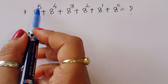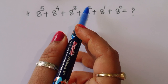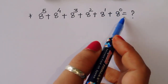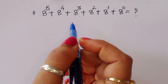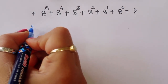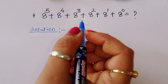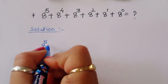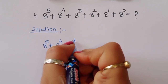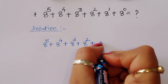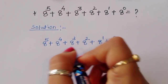The question is: 8 power 5 plus 8 power 4 plus 8 power 3 plus 8 power 2 plus 8 power 1 plus 8 power 0 is equal to what? We have to find out the value of this expression. Let's see the solution.